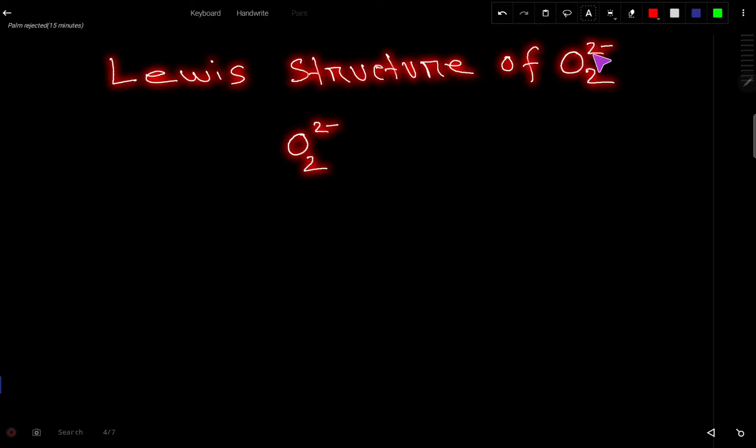Lewis structure of O2^2-. This is the peroxide ion. First, you have to count the number of valence electrons in O2^2-. Oxygen is an element of group 6A, which is why it has 6 valence electrons.